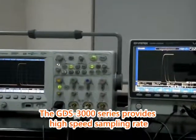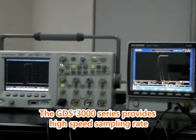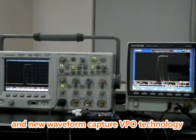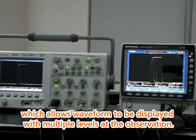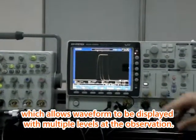The GDS-3000 series provides high-speed sampling rate and new waveform capture VPO technology which allows waveform to be displayed with multiple levels at observation.